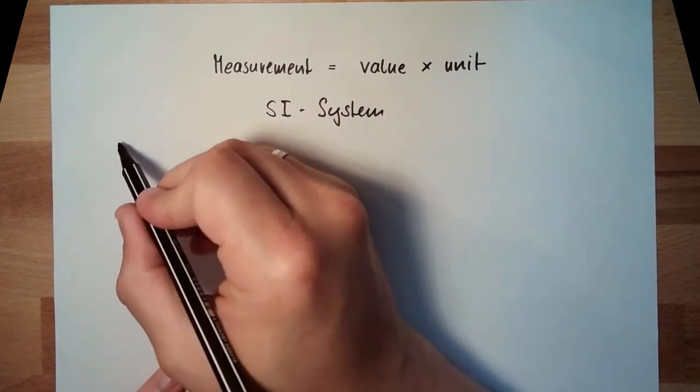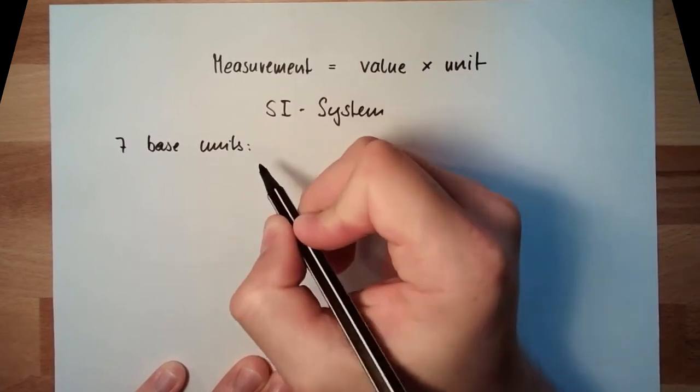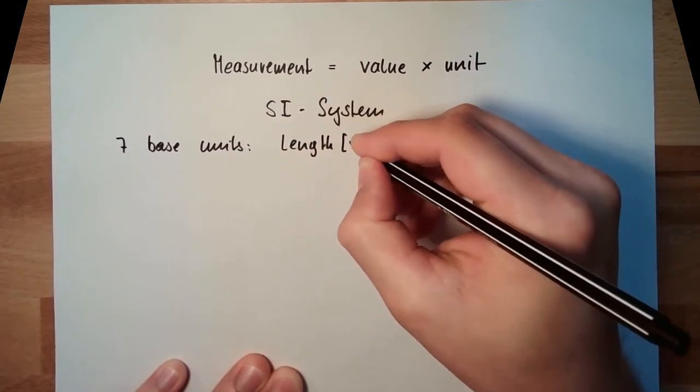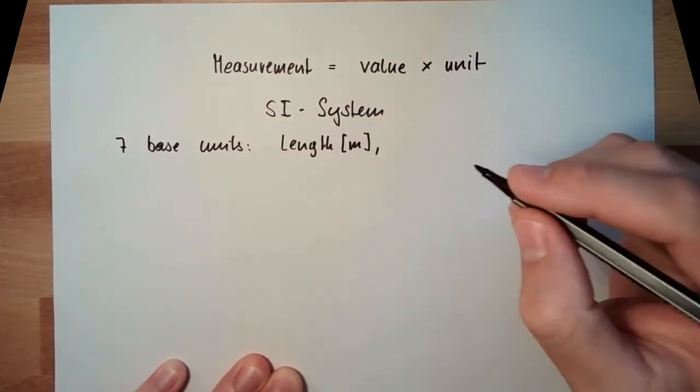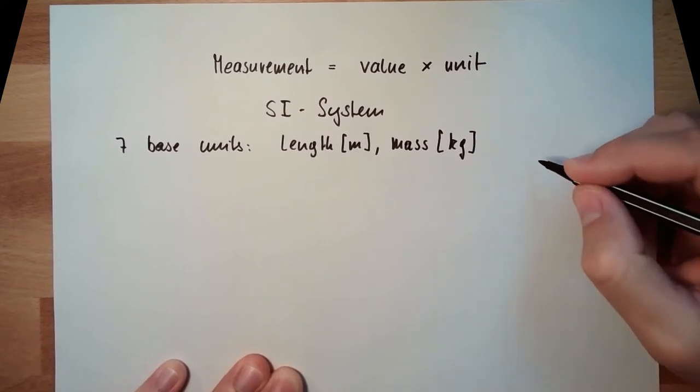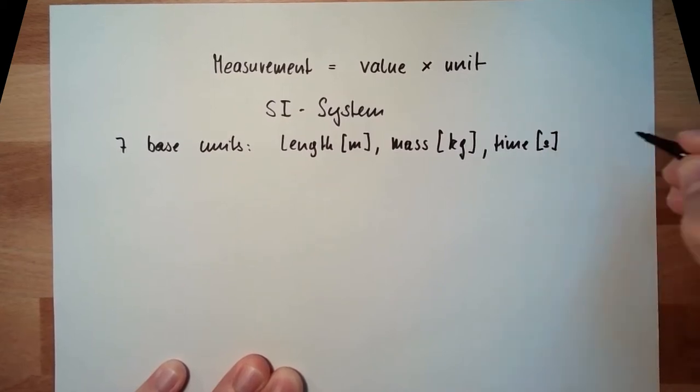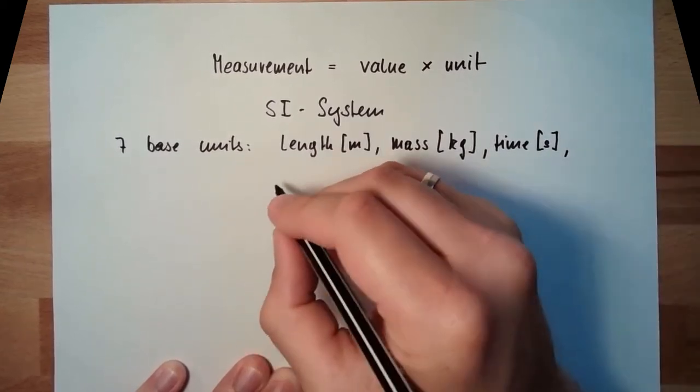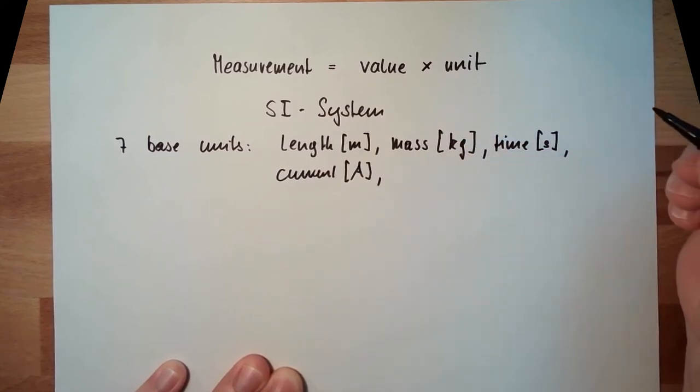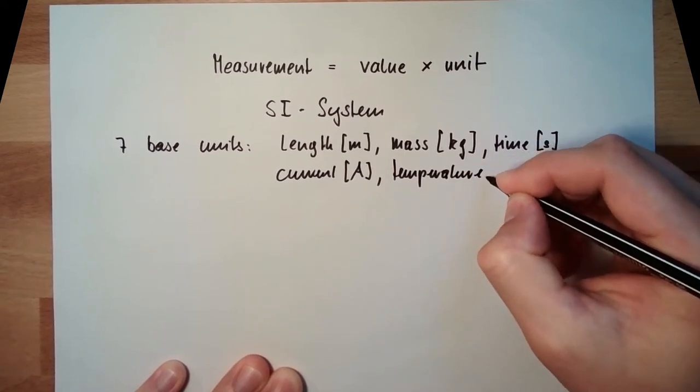There are seven base units defined. And these base units are length, measured in meter. Then there is the mass, measured in kilograms. Then there is the time, measured in seconds. Then there is the current measurement, measured in ampere. Then there is the temperature, measured in Kelvin.